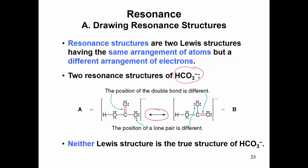Neither of these structures is the true structure. But neither is wrong either. So if we look, we have the same arrangement of atoms, so oxygen, oxygen, hydrogen, oxygen, oxygen, hydrogen, around the carbon. Three oxygens around the carbon, but what's different is the arrangement of electrons.